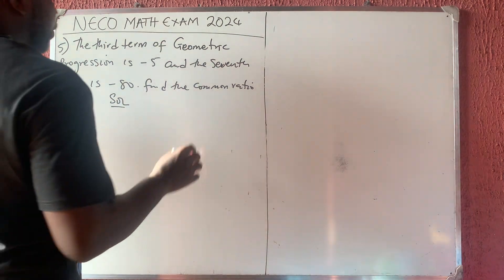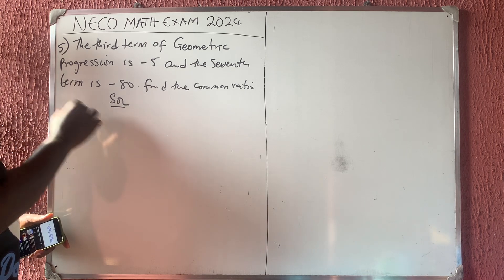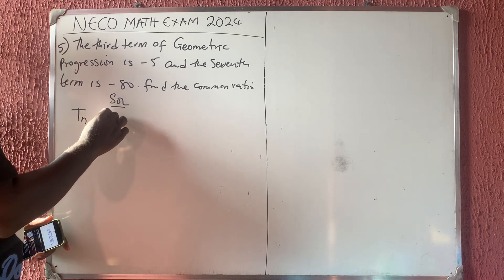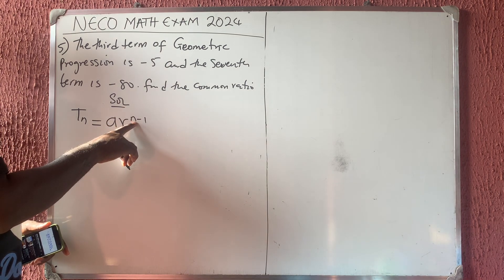Now this is very simple. What do we do? You should know that the Nth term of a geometric sequence or geometric progression is given by A R raised to the power N minus 1, where N is the number of terms.